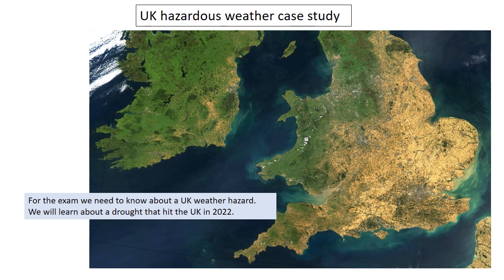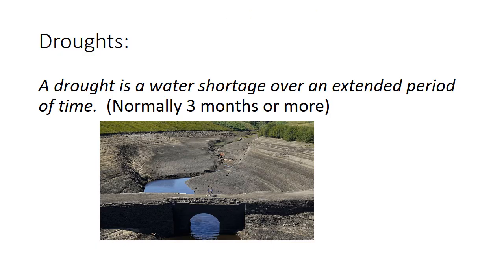For the global hazards topic, we need to know a UK hazardous weather case study. Our chosen case study is the UK drought that hit the UK in 2022. A drought is defined as a water shortage over an extended period of time, normally three months or more.